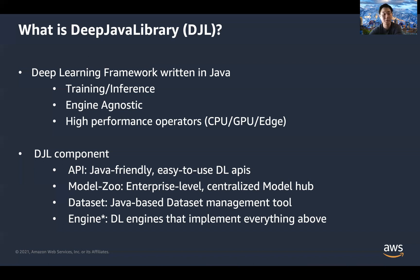Loading a model through the model zoo is as simple as just one line. Deep Java Library also supports popular datasets, such as ImageNet and the COCO dataset for computer vision. It also includes Stanford reviews and several major NLP datasets, including the Wikipedia dataset.